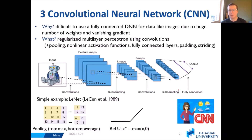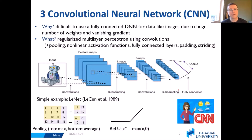What is a CNN? It's basically a regularized multilayer perceptron using techniques like convolutions, pooling, nonlinear activation functions, fully connected layers at the end, and concepts like padding and striding. In the middle of this slide there's a picture of LeNet from 1989, where LeCun started with handwritten digit images. There are convolutions calculated, then subsampling, and that's repeated. Finally, at the end you have your fully connected layer with some output.